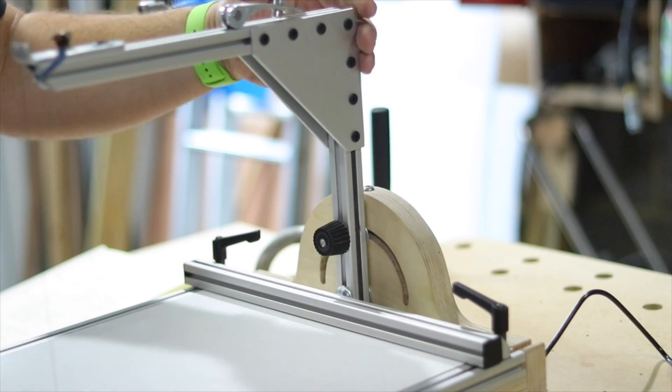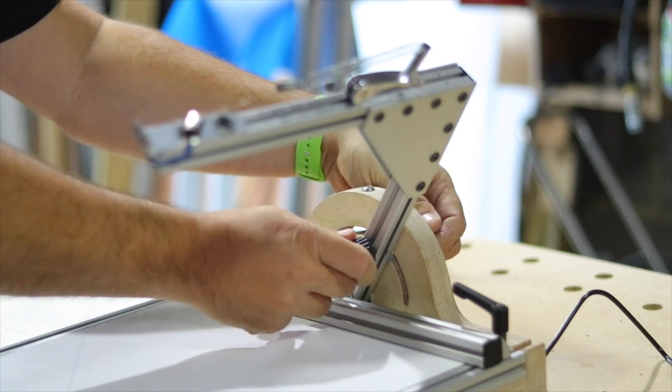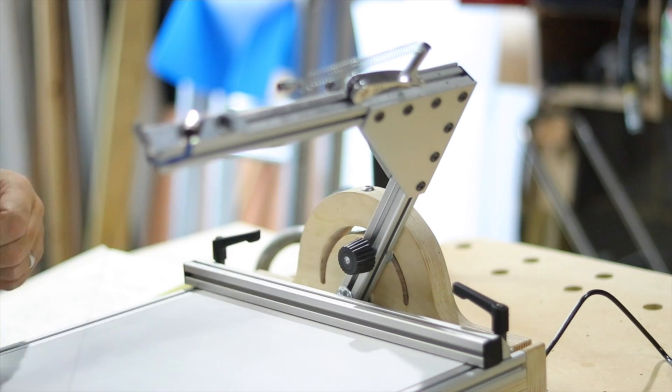Adjusting the angle of the arm is done just by loosening one of the knobs, tilting it, and tightening it, and you have an angle to the wire.